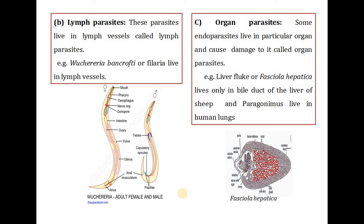The third type of visceral parasite is organ parasites. Some endoparasites live in a particular organ and cause damage to it. For example, the liver fluke Fasciola hepatica lives only in the bile duct of the liver of sheep, and Paragonimus lives in human lungs.